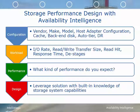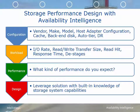To summarize storage performance design with availability intelligence, you're going to need configuration information including the vendor, make, model, host adapter configuration, cache size, back-end disk configuration, as well as any auto tier or disaster recovery settings. You'll also need a workload that includes the IO rate, read-write transfer sizes, cache read hits, response times on the front end, and the number of D-stages to the back-end disk drives. Additionally, you'll need to know what kind of performance you expect from the users. Lastly, once you have all of those things, you need to leverage a solution that has knowledge about what storage systems can do in order to anticipate and design the appropriate configuration.